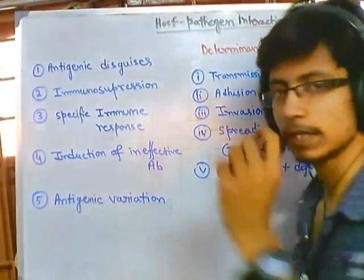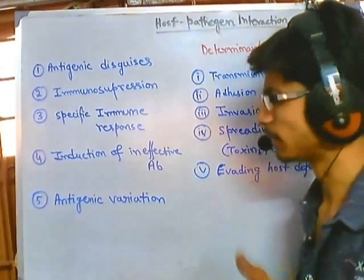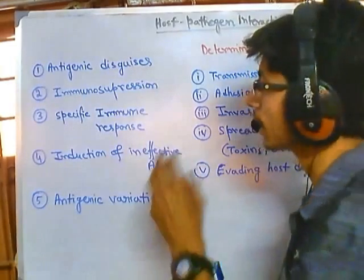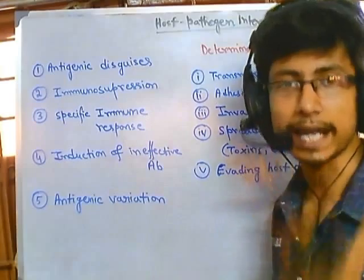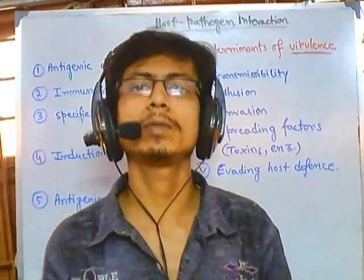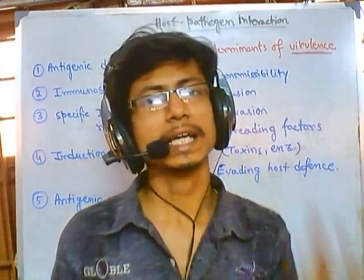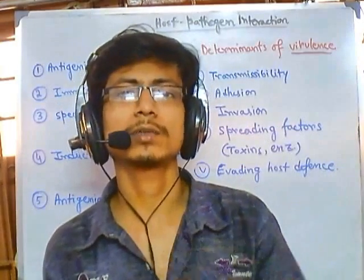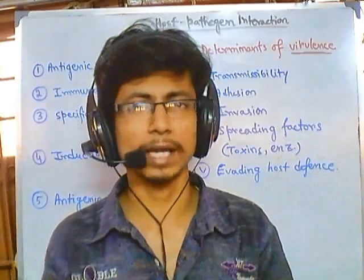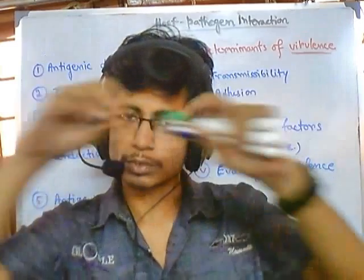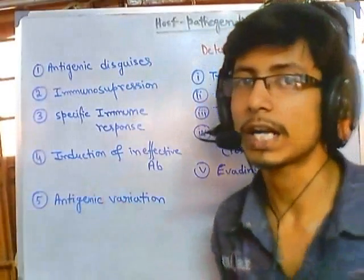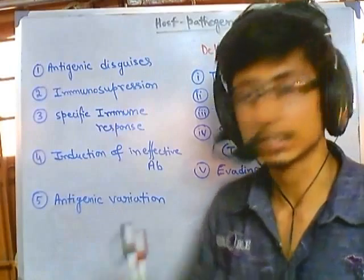For example, Salmonella typhi is a bacteria that causes typhoid fever. When it first enters the bloodstream, it starts acting like an antigen, which would generate an immune response. So instead, it resides inside the gallbladder for seven to eight hours, during which time the immune system thinks everything is fine and no antigen is present in the blood, so the immune cells stand down. Once they leave the bloodstream, Salmonella typhi thrives again, re-entering the bloodstream and multiplying.